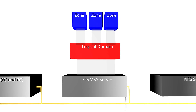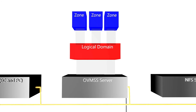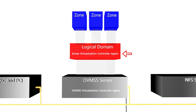There are two agents that control the layered virtualization interface in Ops Center. First is the Oracle VM Server for SPARC Virtualization Controller Agent, which resides on a control domain. It enables you to create, manage, and monitor logical domains, including IO and root domains. Second is the Zones Virtualization Controller Agent, which is automatically installed on a logical domain during its provisioning. It enables you to create, manage, and monitor non-global zones running within the logical domain.